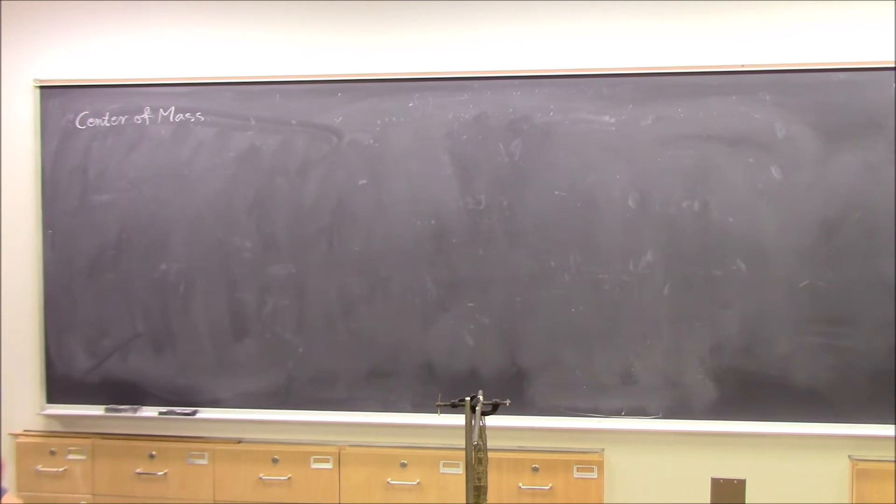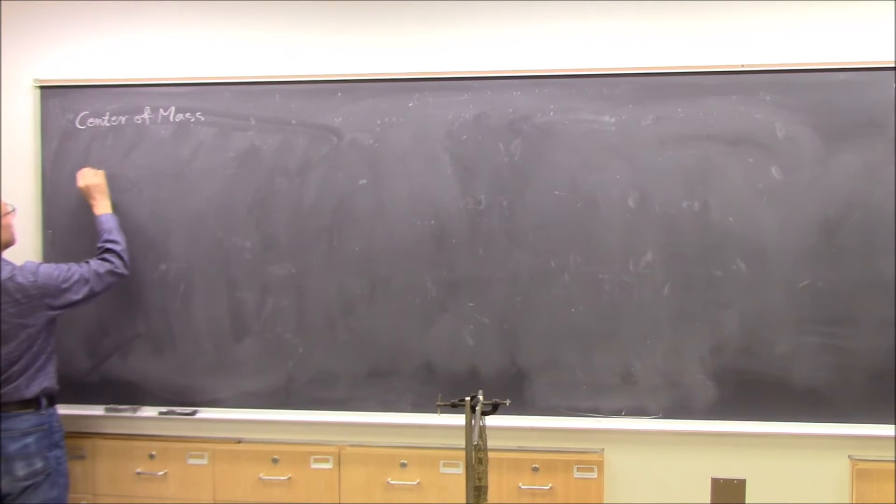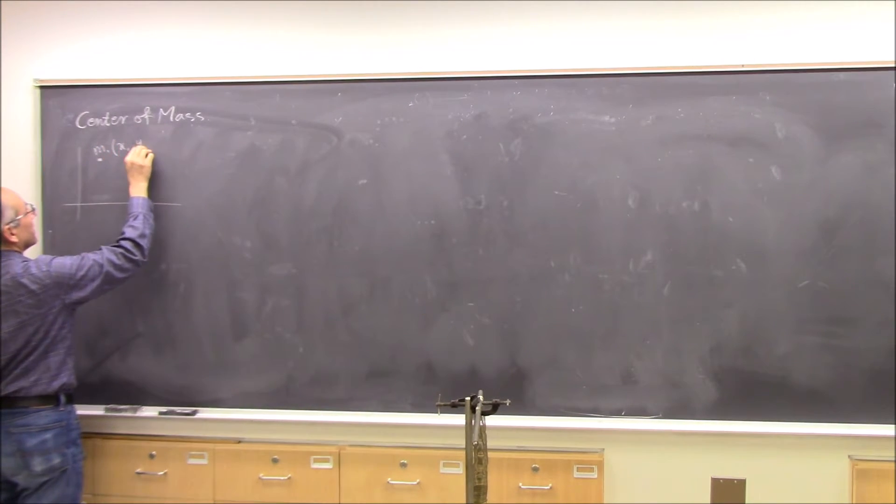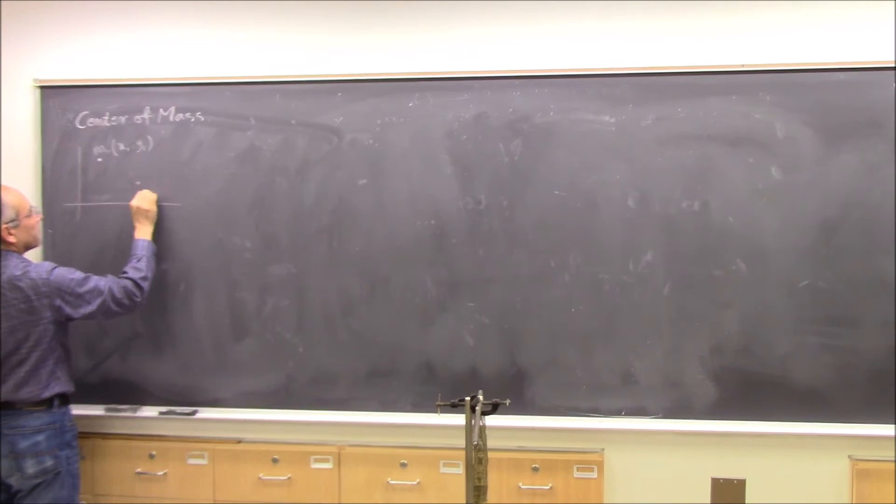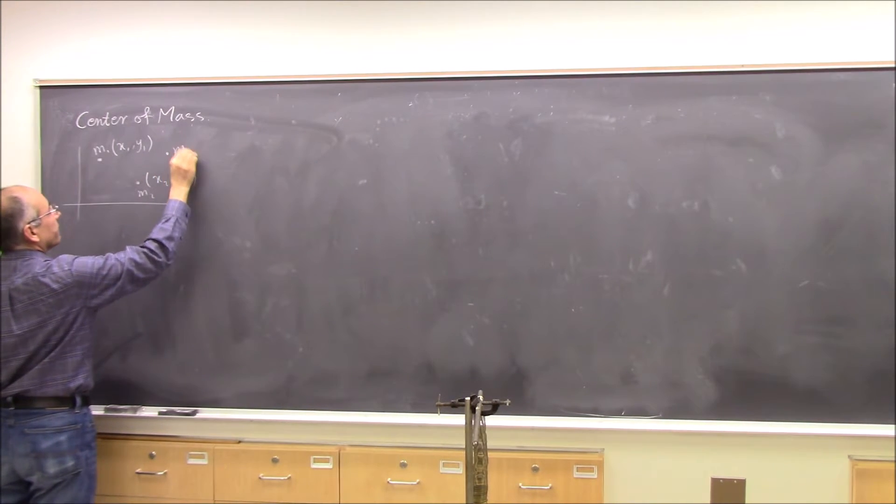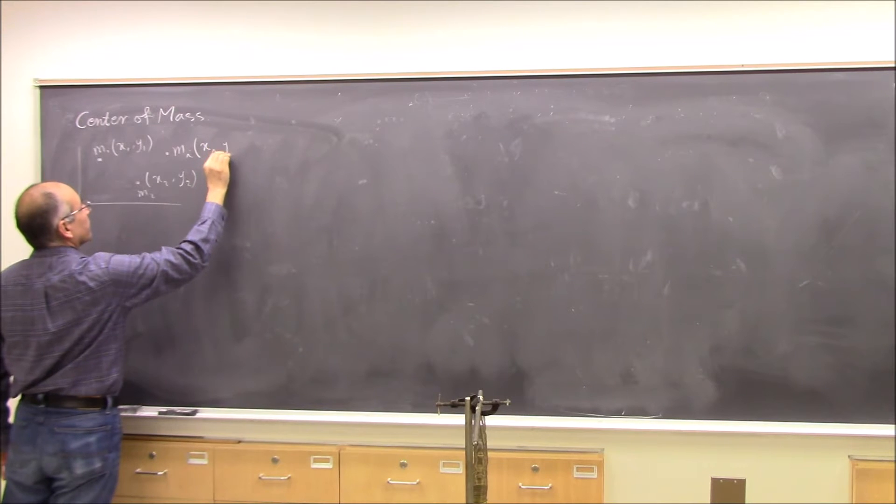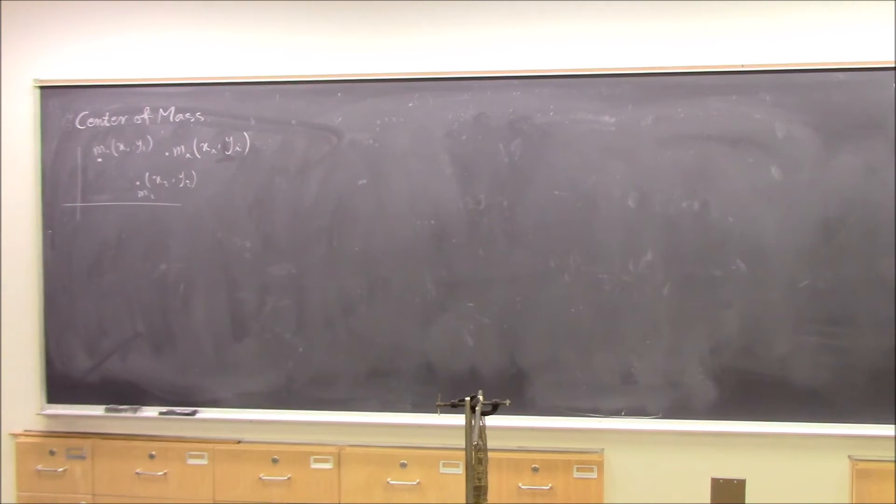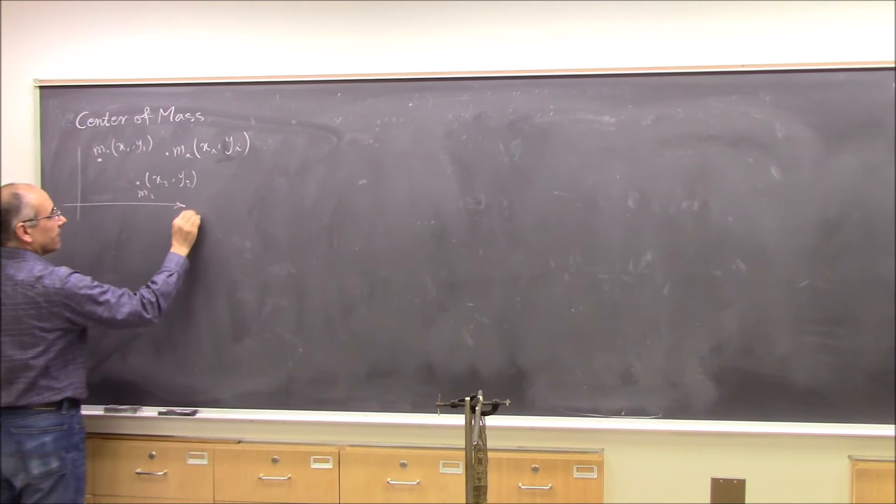We said if you have a coordinate system, a few masses: m1 with coordinates x1 and y1, m2, mi in general in coordinates xi, yi, and so forth. You have these in a coordinate system, x and y.